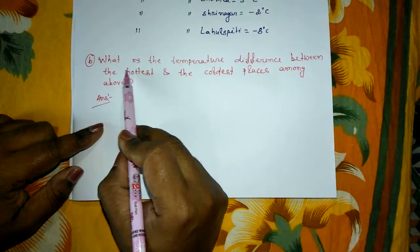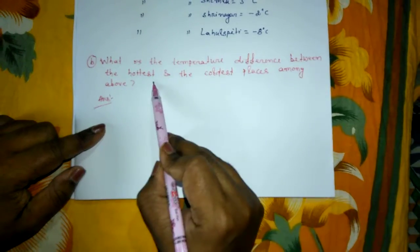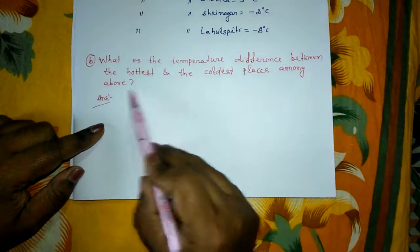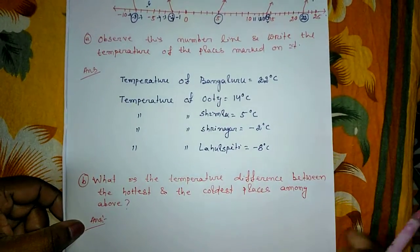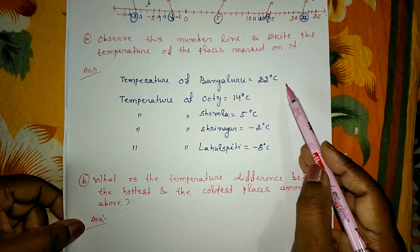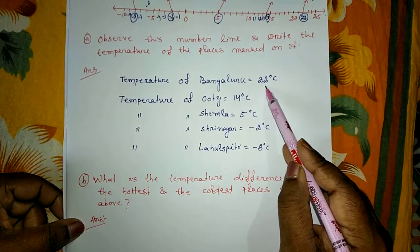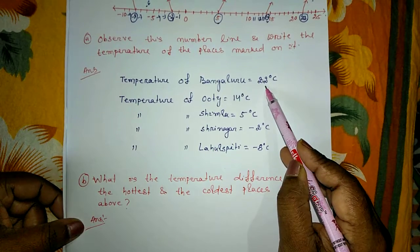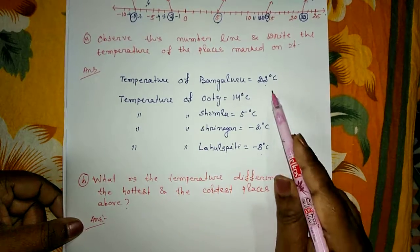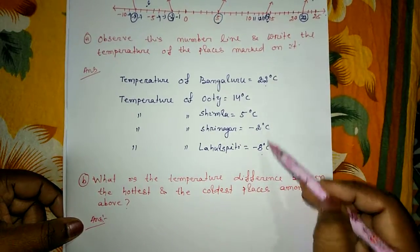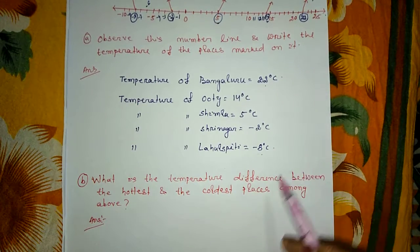The question asks: what is the temperature difference between the hottest and coldest places? We found the different temperatures in question number 1. The highest temperature — the hottest — is Bangalore, and the lowest temperature — the coldest — is Lahaul Spiti.